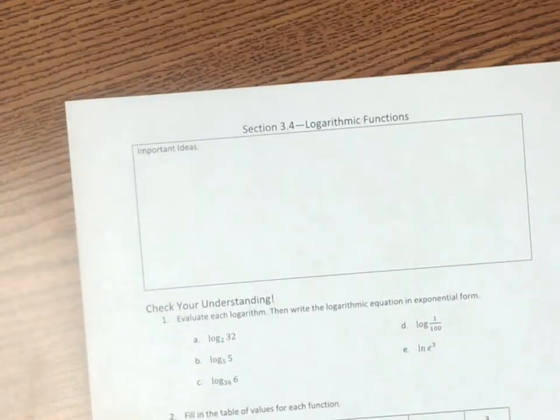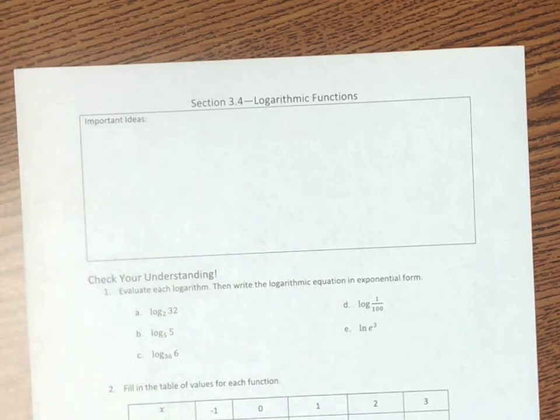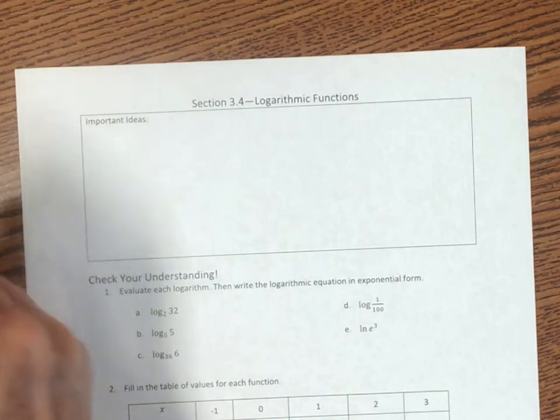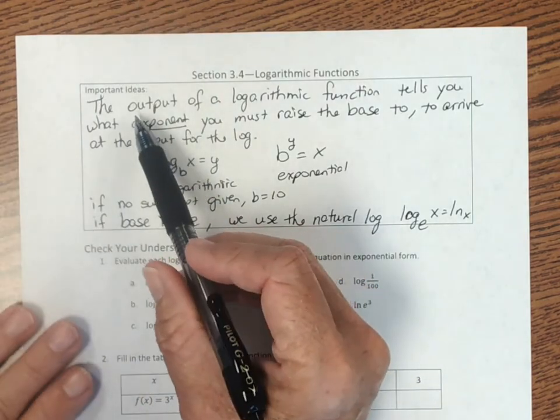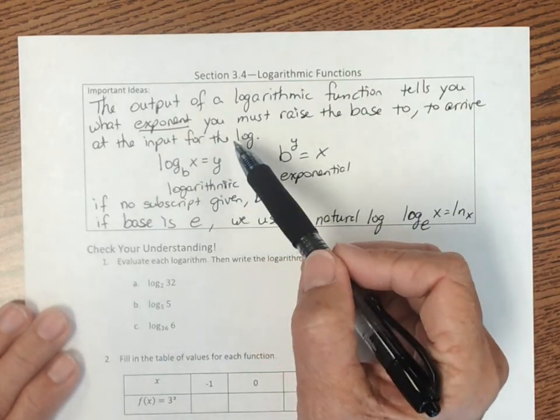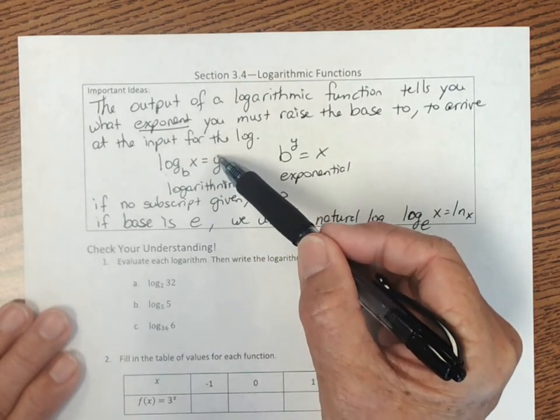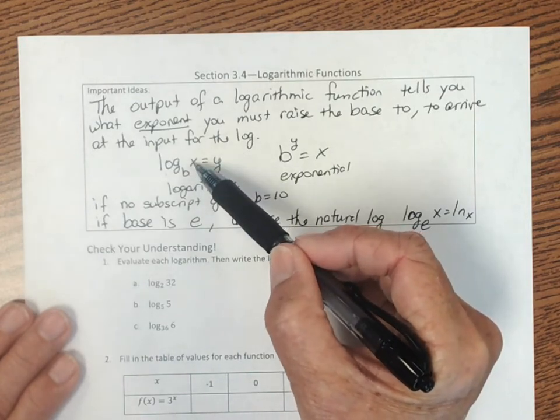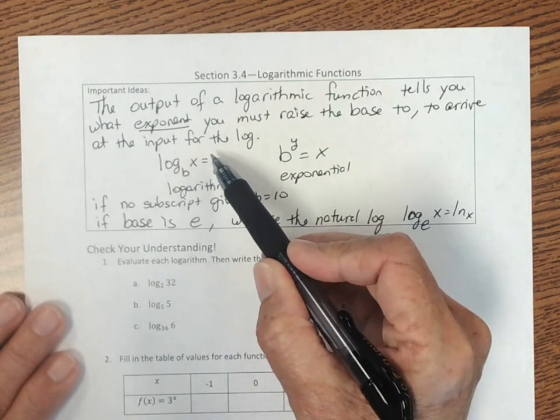And just let's take a look now and go over some of the important concepts. Because what these are all about, this mystery function, you hopefully have guessed, is about logarithmic functions. So the output of a log function, let me get this all written down for you. So the output of a logarithmic function tells us what exponent you must raise the base to to arrive at the input for the log. So it's written like this, log base b of x equals y. So y is the exponent that I have to raise the base to. So base raised to this exponent gives me this value. So I can write this in exponential form, which again is the base raised to this value equals this. Base to the output equals the input for the log.